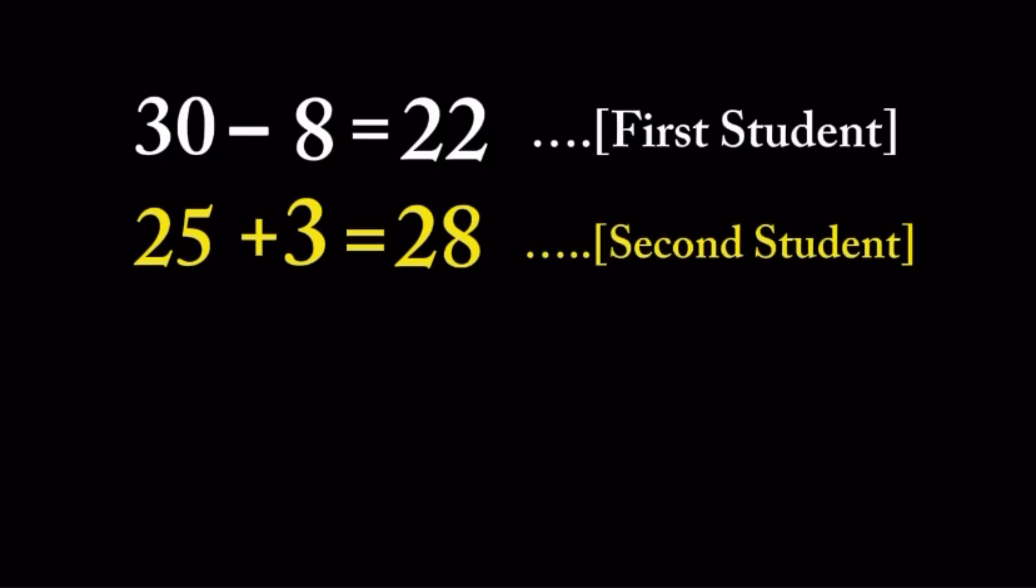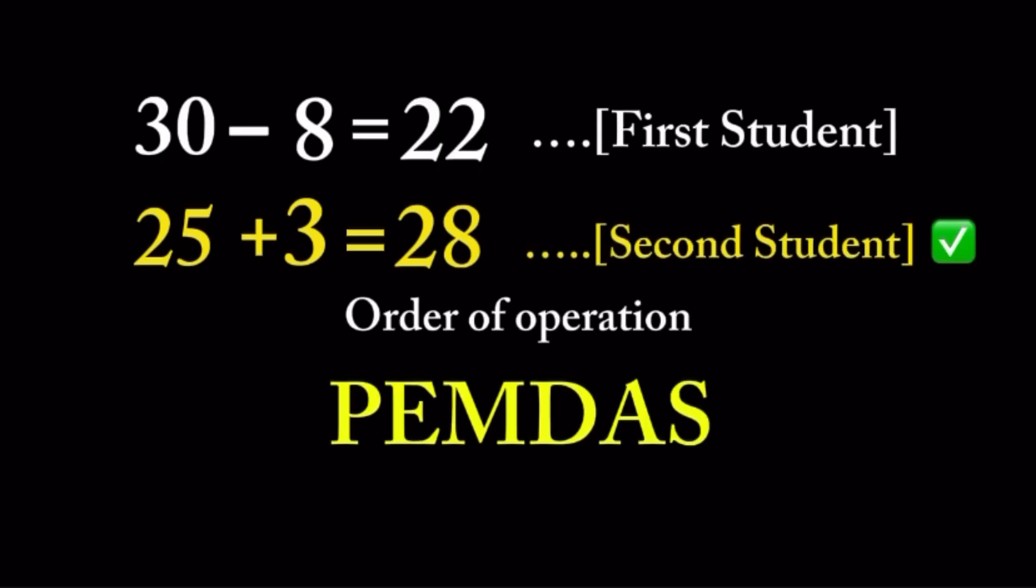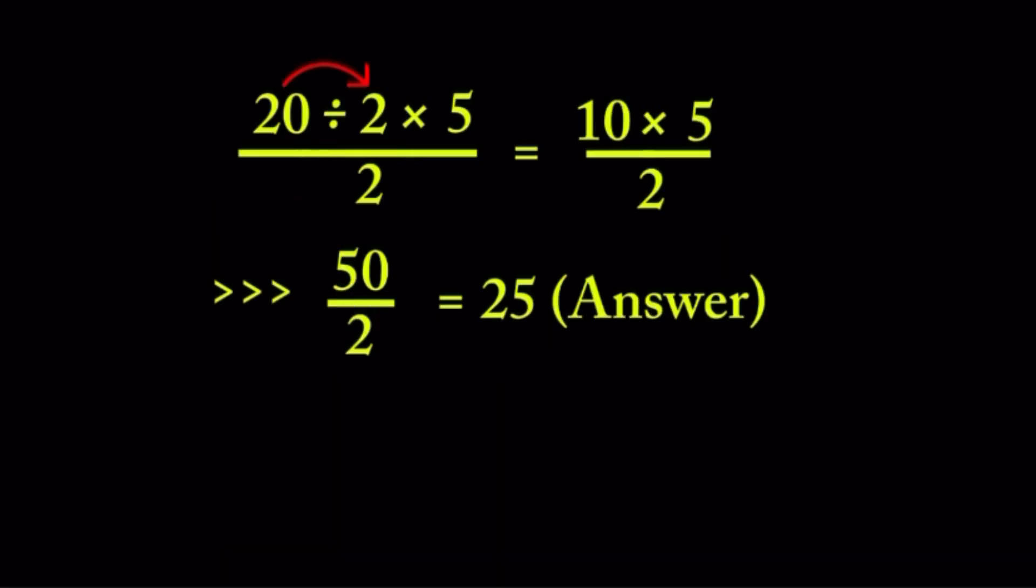The second student is correct. In order of operation, we solve from left to right because addition and subtraction have the same power. So the correct answer for this question is 28.